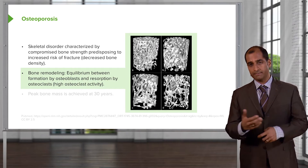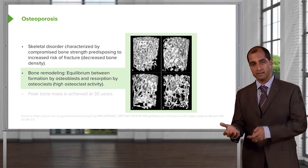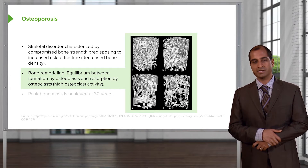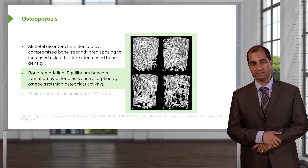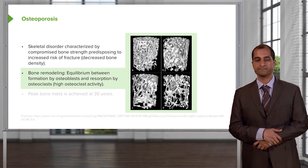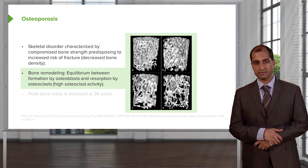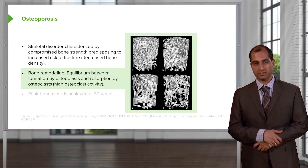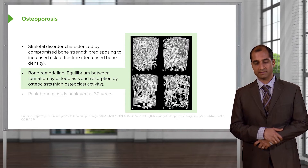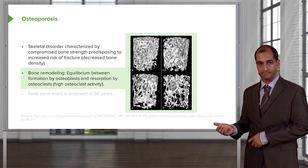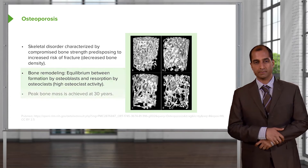For example, a female who hits menopause at the age of 50 has decreased estrogen. This decreased protection of the bone may result in an imbalance leading to osteoporosis.